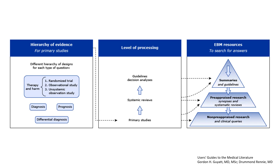Let's look at this figure showing the hierarchy of evidence. To look at therapy and harm, we usually look at randomized control trials or observational studies. In the hierarchy of evidence, pre-appraised research — that is the synopsis, systematic reviews — all comes quite higher up in the evidence pyramid. Summaries and guidelines come right on the top.